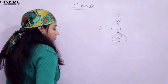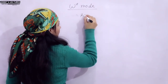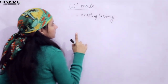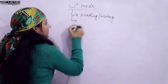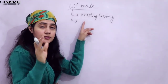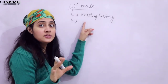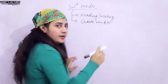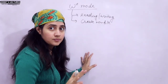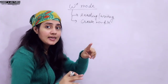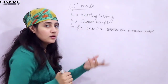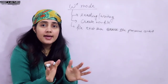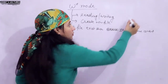Now let's see what W plus mode is. It will open a file for both reading and writing. The special case is: if the file doesn't exist, it will create a new file and open it. If the file already exists, it will truncate the file length to zero — meaning it will erase the previous content — and the cursor will be at the starting position.